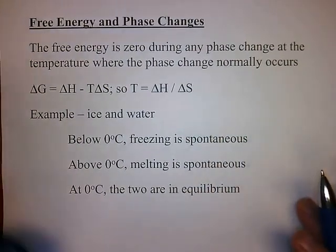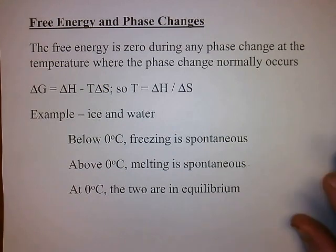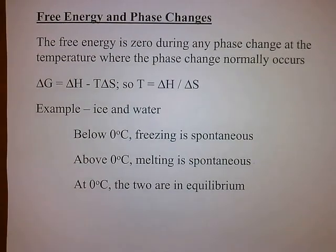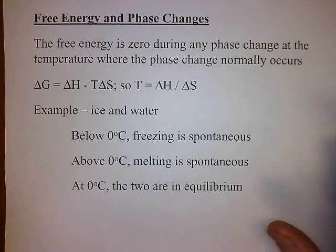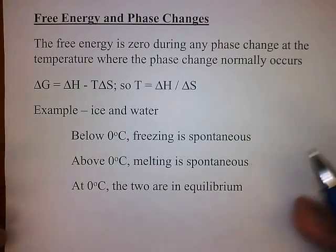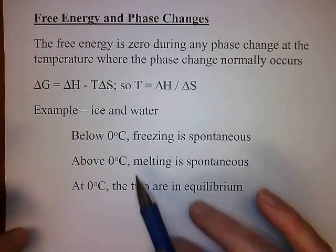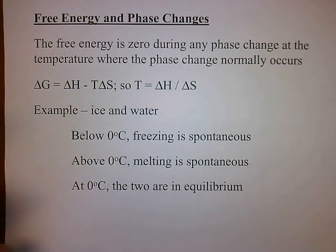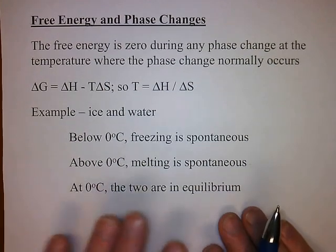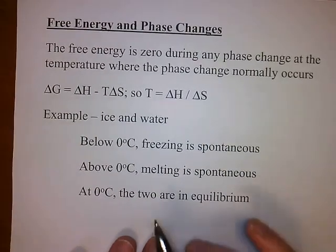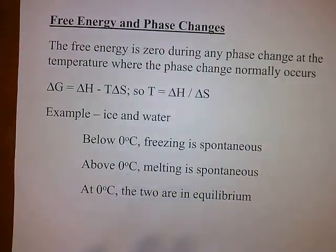For example, ice and water. We know that ice freezes at zero degrees Celsius. If we're below zero Celsius, freezing is spontaneous — all your water will freeze until it's all ice. If we're above zero, melting is spontaneous, and all your ice will melt to form liquid water. If we're at zero degrees Celsius, then the two are in equilibrium, and that's where there's no free energy change.